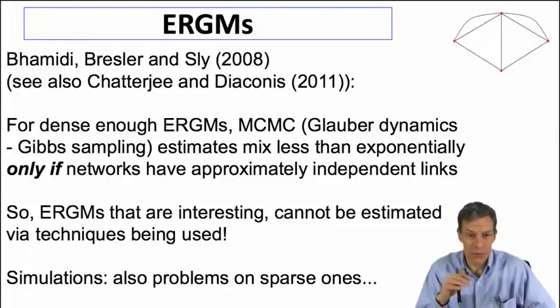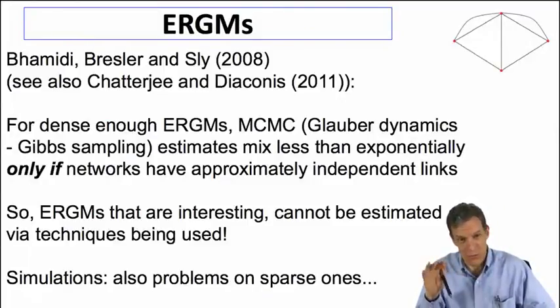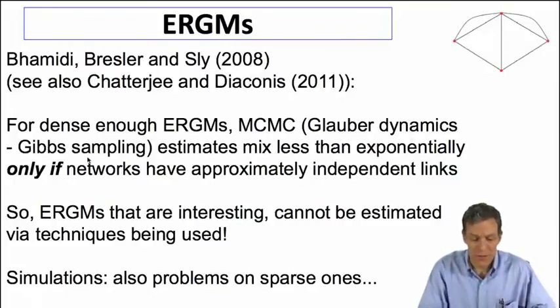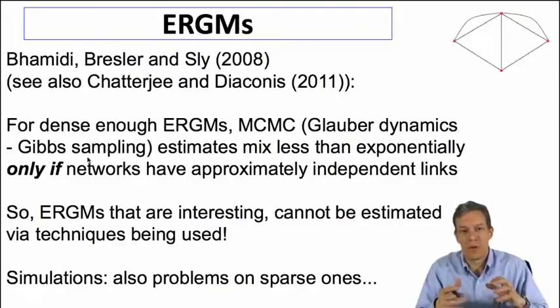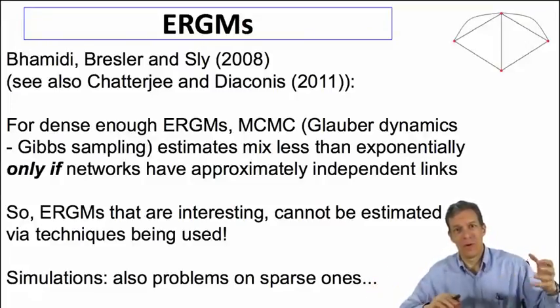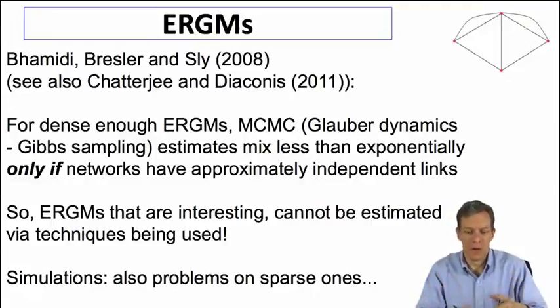So the paper by Bhamidi, Bresler, and Sly in 2008. There's also some work by Chatterjee and Diaconis and others. The Bhamidi result is actually quite impressive. What it does is it shows that if you're looking at exponential random graph models, and in their case they look at dense enough ones, if you look at a class of these models, it shows that the MCMC techniques for actually trying to sample different possible networks to figure out what these relative probabilities are, using global dynamics or Gibbs sampling, variations on Metropolis-Hastings, if you know what those are.